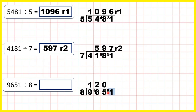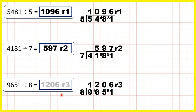Now 51 divided by 8 is 6, remainder 3, because 6 times 8 is 48, but then we need 3 more to get to 51. So our answer is 1,206, remainder 3.